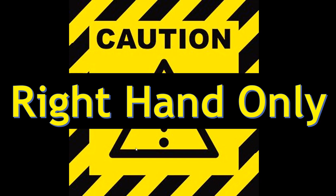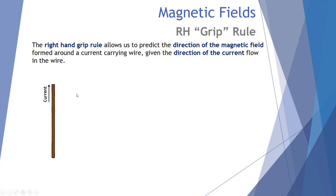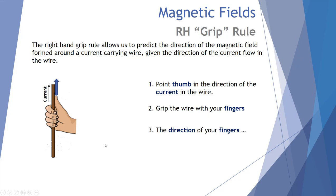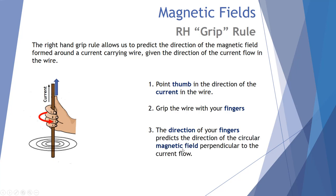Caution: we're about to look at four right hand rules — you only use your right hand. The first is the right hand grip rule, which allows us to predict the direction of the magnetic field around a current-carrying wire given the direction of the current. Hans Christian Ørsted discovered in the 19th century that running a current through a wire creates a magnetic field in circular patterns perpendicular to the current.